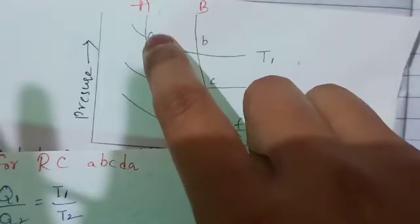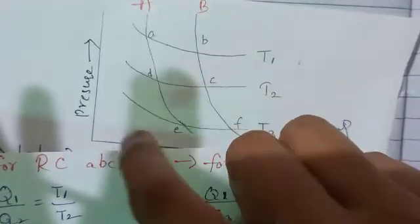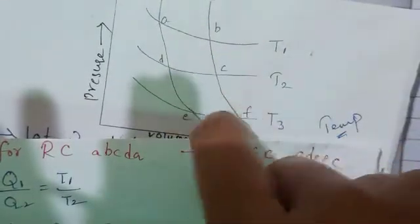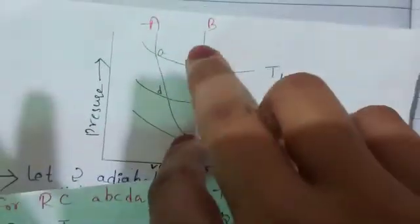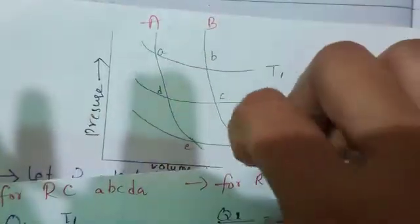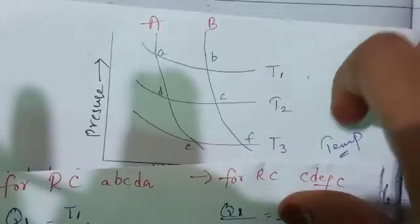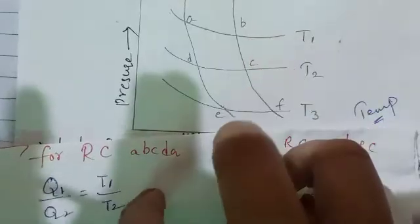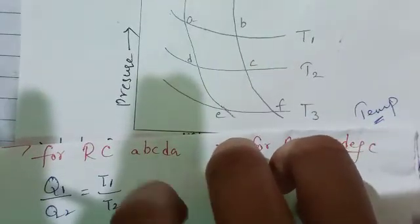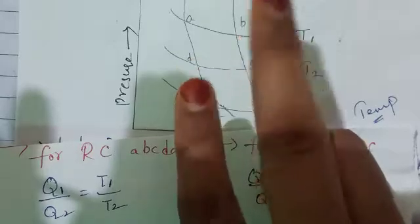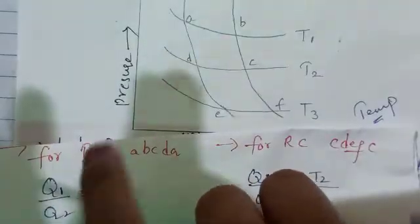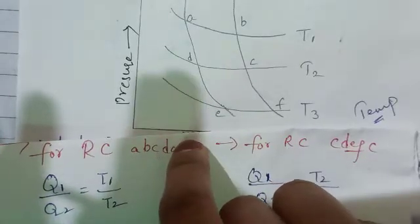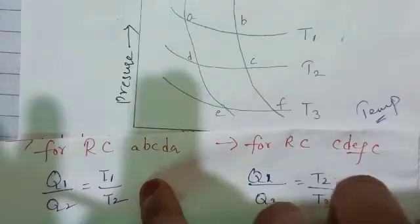We consider cycle A-B-C-D-A, and the same way another cycle D-C-F-E-D. For the reversible cycle A-B-C-D-A, T1 by T2 is equal to Q1 by Q2. This is the Kelvin scale of temperature, as shown in the previous video. So for the reversible cycle A-B-C-D-A, Q1 by Q2 is equal to T1 by T2.